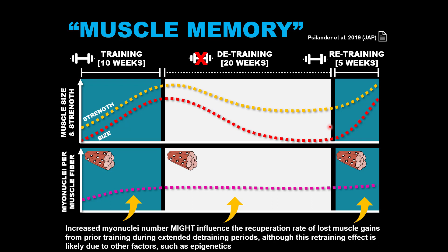During just five weeks of retraining — half the time of the initial training phase — subjects recuperated almost 100% of their lost gains. They experienced gains within five weeks that initially took 10 weeks to achieve. Research evidence shows that the muscle holds some kind of memory of prior adaptation, and that even after a period of detraining, the muscle may be primed for re-adaptation and recuperating lost gains.